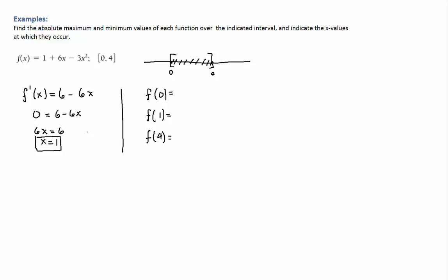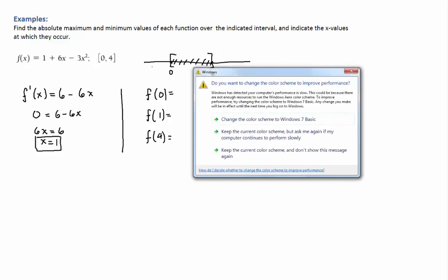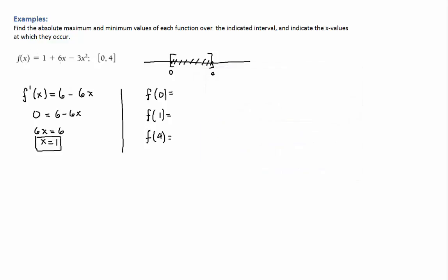So once you evaluate them all, the largest number you obtain is going to be your absolute max. So let's take a look. f of 0, when you plug 0 here you get 1 plus 0 minus 0, so that's 1. When you plug x equals 1 here you get 1 plus 6 is 7, minus 3 is 4.